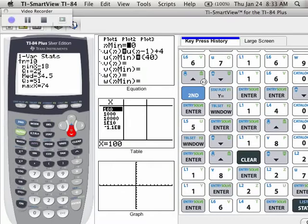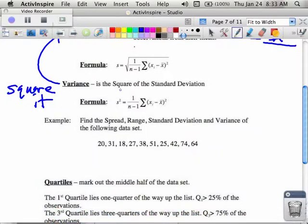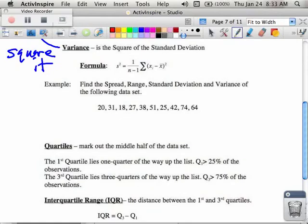So if we go back to our notes and we start answering some of these questions. For example, if I wanted to answer the first part, which said the spread, I would say the spread is from whatever my minimum value, 18, to my maximum value, 74.